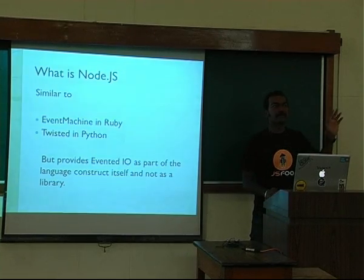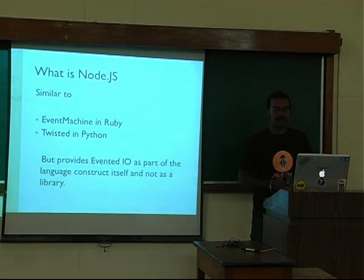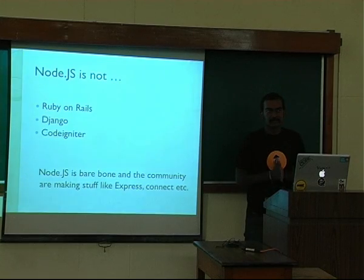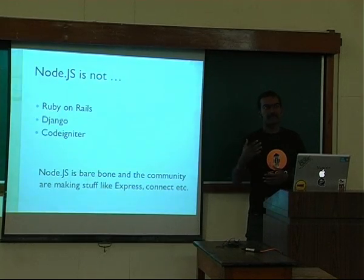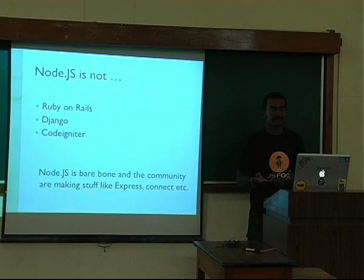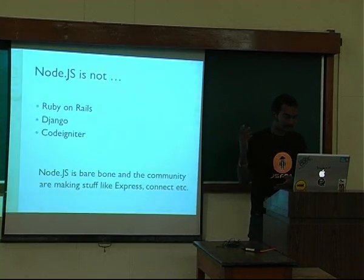Node.js is not Ruby on Rails, it's not Django, it's not CodeIgniter. It's a framework where you can write your own Ruby on Rails or your own Django. The community is doing that, and in Node.js you have a lot of these frameworks available — the famous among them being Express, Socket.IO, Connect, and all that.